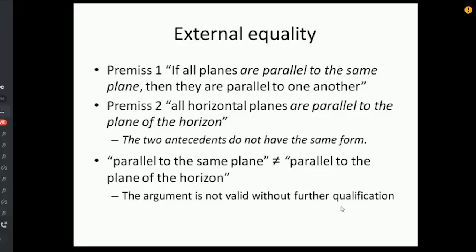So Bev's reinterpreted argument says if all planes are parallel to the same plane, then they are parallel to one another. Premise 2 is all horizontal planes are parallel to the plane of the horizon. Now you can immediately see, and again this is not rocket science, the two antecedents in the first premise do not have the same form at all, because the sequence of words parallel to the same plane is not the same as the sequence of the words parallel to the plane of the horizon. If you're going to do logic at all guys, if you're going to do logic at all, do it properly and make sure that you have the same terms, but the same term occurs in the same way everywhere in the same argument. Don't keep changing the words.